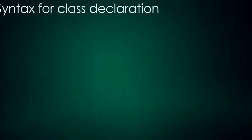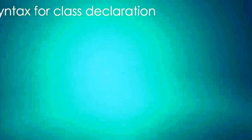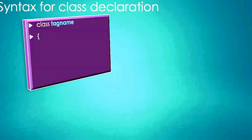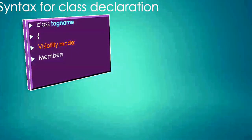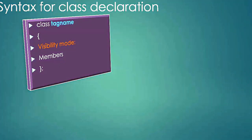The syntax to declare a class: first we need the 'class' keyword, followed by the tag name, then opening braces. Inside, we specify the visibility mode we would like to use for data members and member functions, followed by the members themselves. Then closing braces terminated with a semicolon.